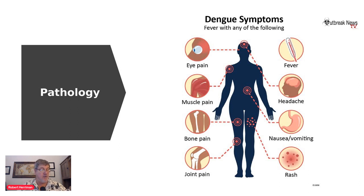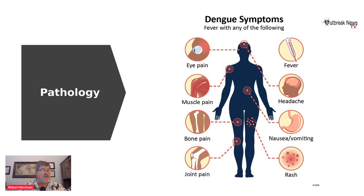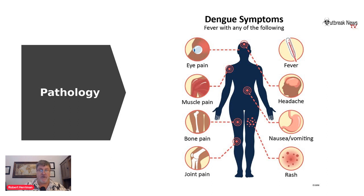Pathology: most people with dengue fever have mild or no symptoms and will get better in one to two weeks. Rarely, dengue can be severe and lead to death. If symptoms occur, they usually begin four to ten days after infection and last for about two to seven days. Symptoms include a high fever of about 40°C or 104°F, severe headache, pain behind the eyes, muscle and joint pains — also known as break bone fever — nausea, vomiting, swollen glands, and a rash.